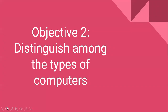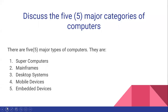Let's move to objective two, where we will distinguish among the types of computers. There are five major types of computers, namely supercomputers, mainframes, desktop systems, mobile devices, and embedded devices. We are going to be looking at each of them individually and we will start with supercomputers.